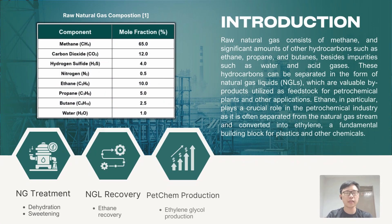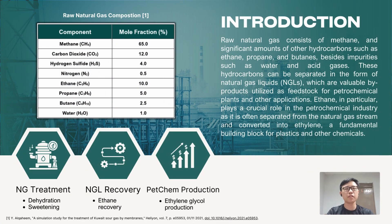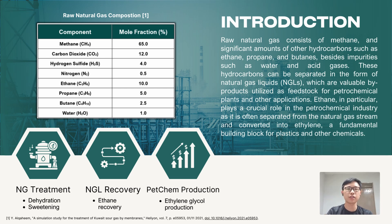In general, methane takes up a major composition of a raw natural gas stream, followed by a significant amount of hydrocarbons such as ethane, propane, butane, and so on, accompanied by a small number of contaminants including water and acidic gases such as carbon dioxide and hydrogen sulfide.